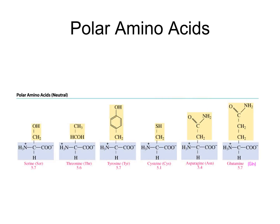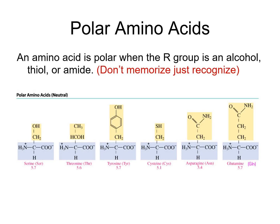The polar amino acids that are neutral — neither acid nor base — are the six shown here. The first three are polar because they have an OH (hydroxyl or alcohol) as part of their side chain. Cysteine has a thiol (SH) as part of its side chain, also considered polar. Asparagine and glutamine have amide groups (C=O-NH2) as part of their side chain, and those are also polar amino acids, but neither acid nor base.